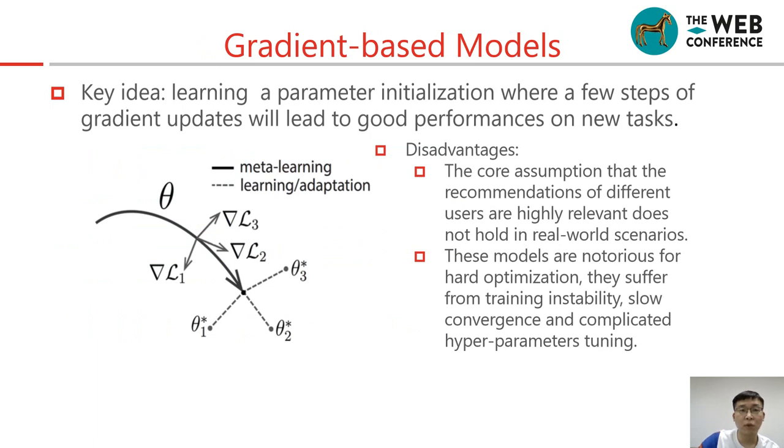In MetaLearning models, gradient-based models are the most famous ones. The core idea is to learn a parameter initialization where a few steps of gradient updates will lead to good performance on new tasks. The disadvantages are listed as follows: The core assumption that the recommendations of different users are highly relevant does not hold in real-world scenarios. These models are notorious for hard optimization. They suffer from training instability, slow convergence, and complicated hyperparameter tuning.